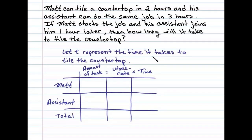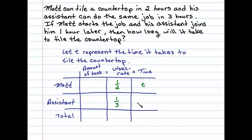We'll let T represent the time it takes to tile the countertop. The amount of task each individual completes is equal to their work rate times the time working on the task. Matt can tile a countertop in two hours, so he can do one-half of the job per hour. His assistant can do the same job in three hours, so he can do one-third of the job per hour. If Matt works for T hours and his assistant joins one hour later, then his assistant works for T minus one hours.